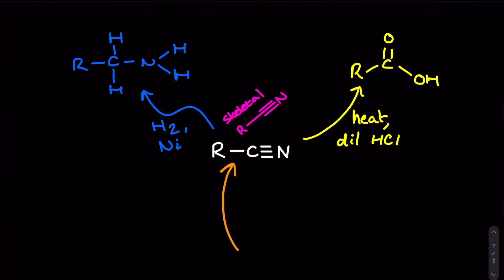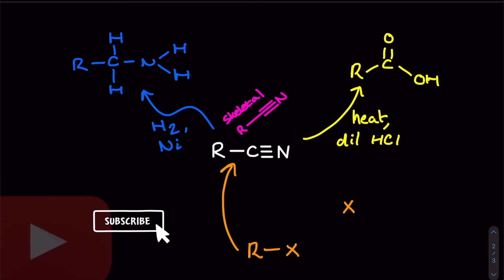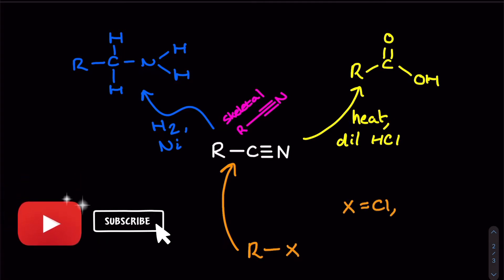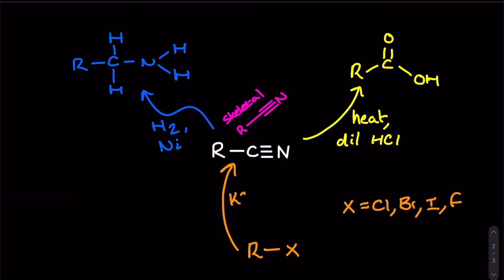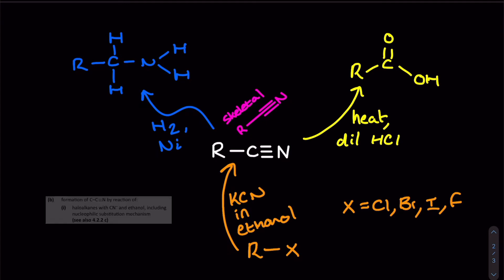Before we finish up I wanted to discuss how we actually can create this nitrile functional group that we've just studied the reactions of. We can form it from a halo alkane reacted with potassium cyanide in the presence of ethanol. This reaction is really important on the OCRA specification because it's an example of a reaction in organic chemistry which forms a carbon to carbon bond and this has its own individual section in the specification.